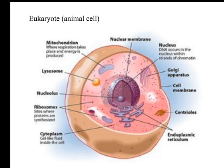This is a eukaryotic cell. You can tell because it's got a nucleus in the centre. It's also got lots of membrane-bound organelles, such as mitochondria, lysosomes, Golgi body, endoplasmic reticulum.